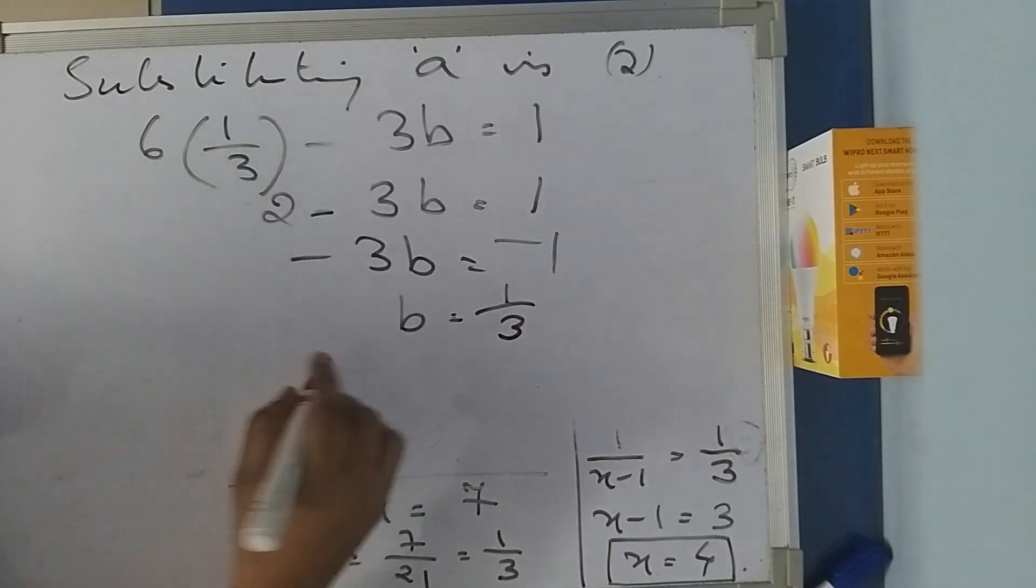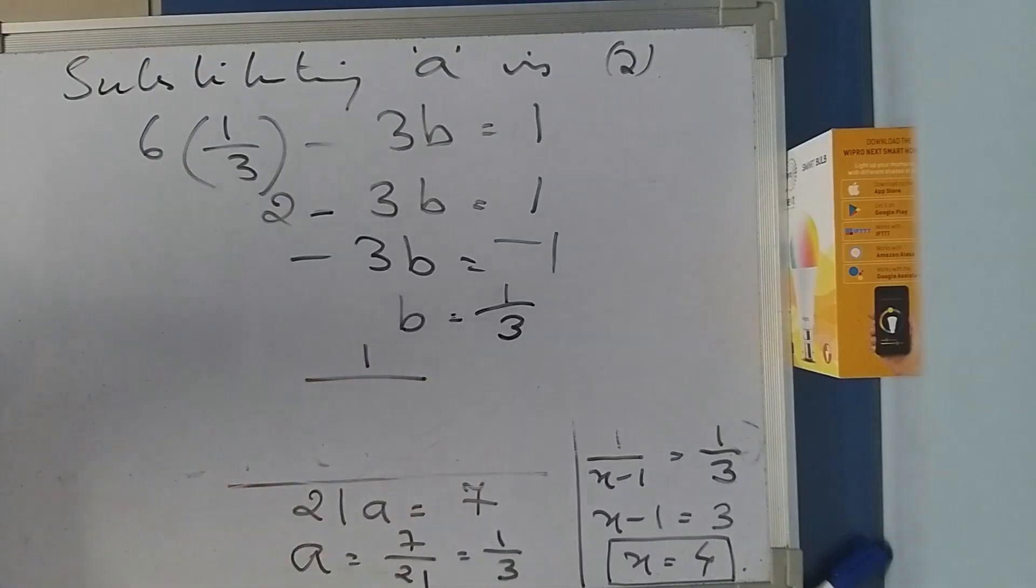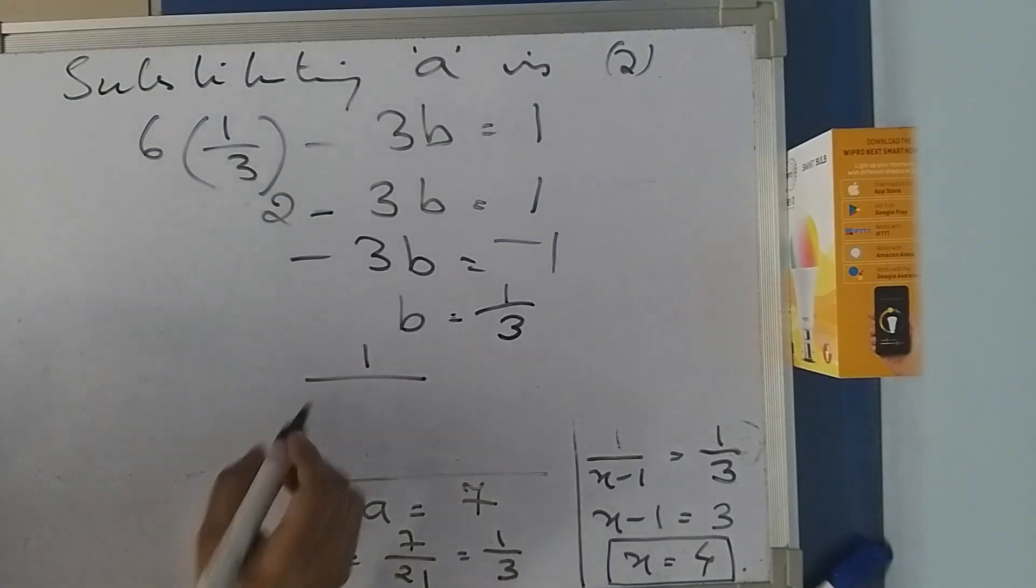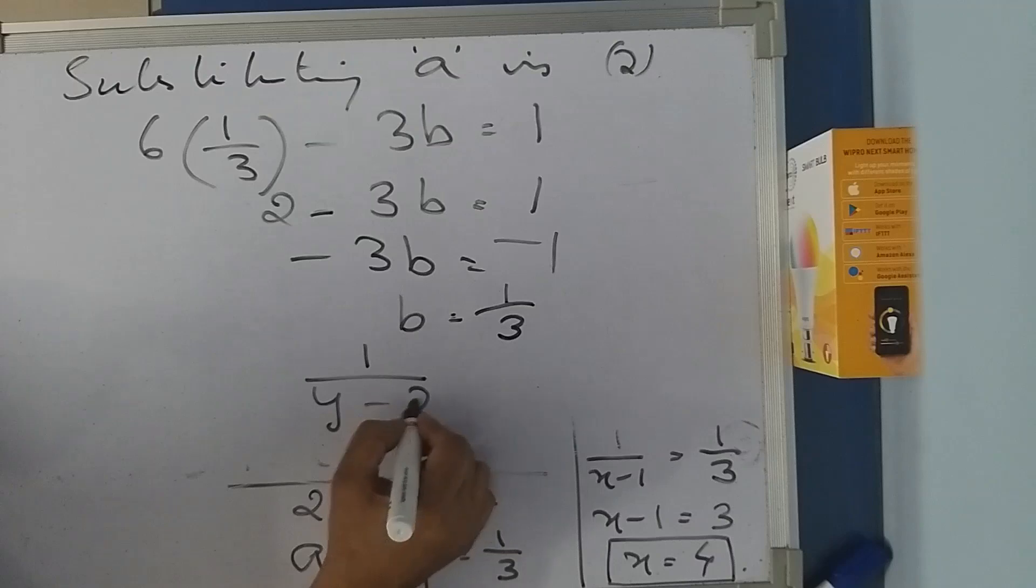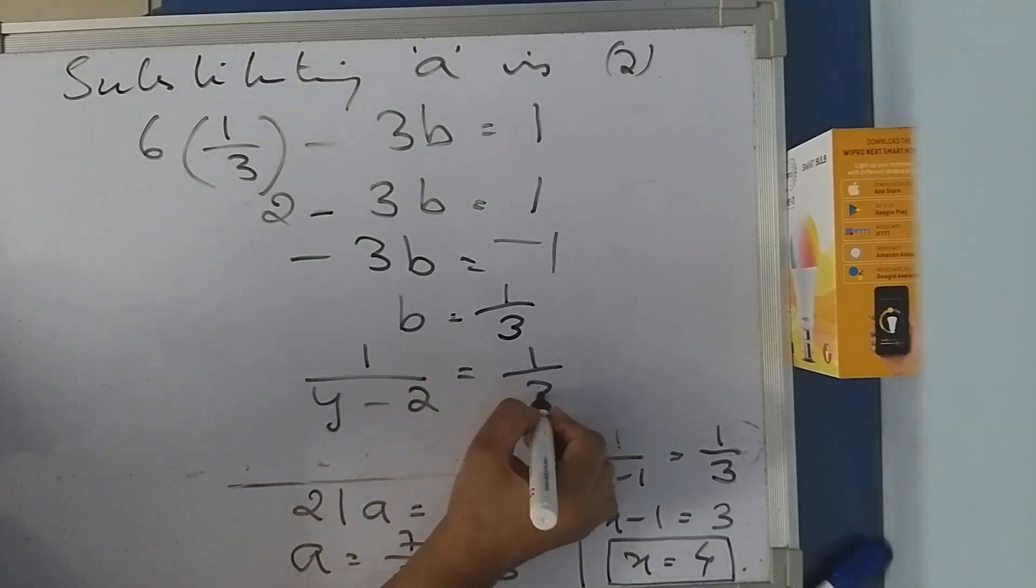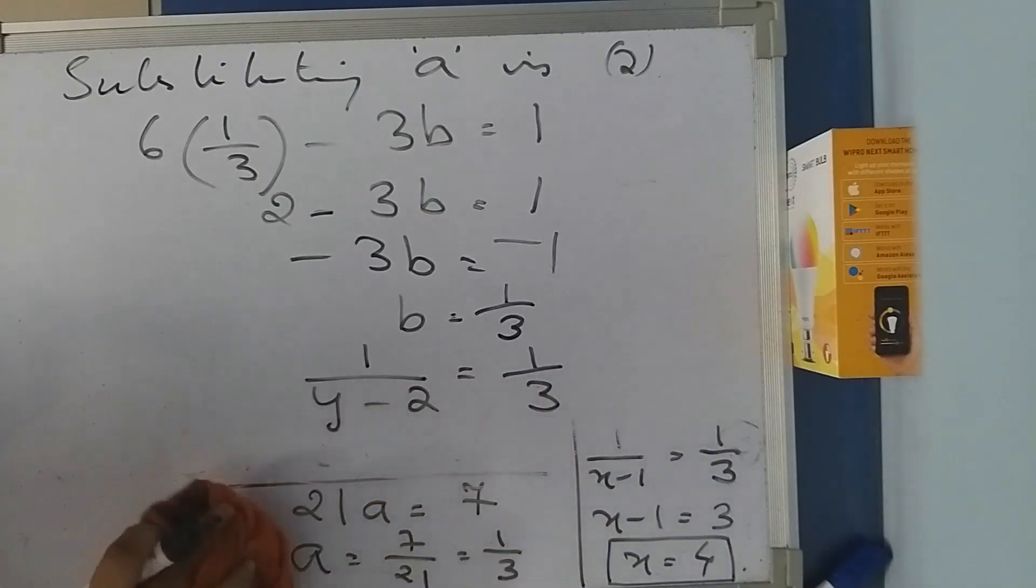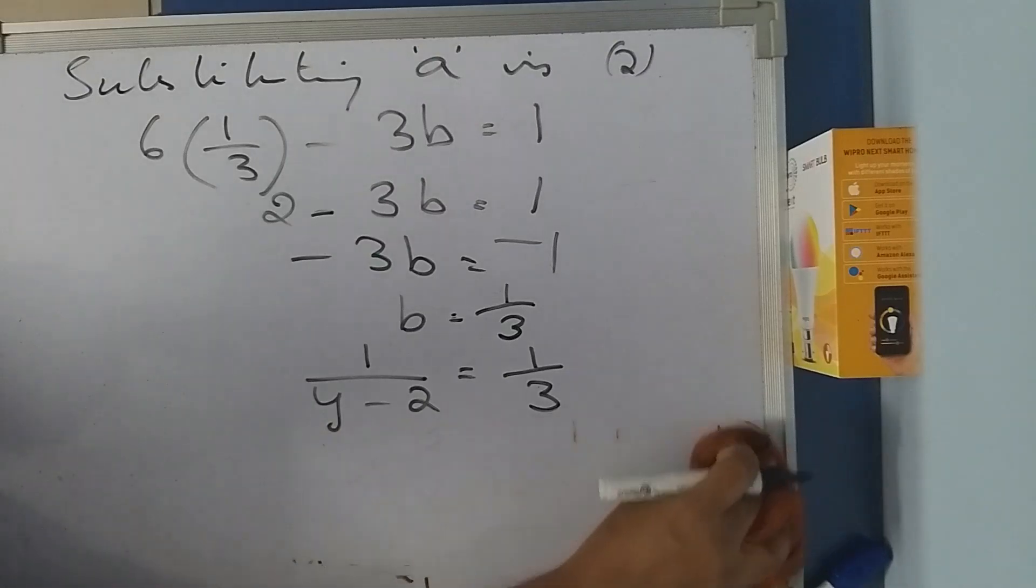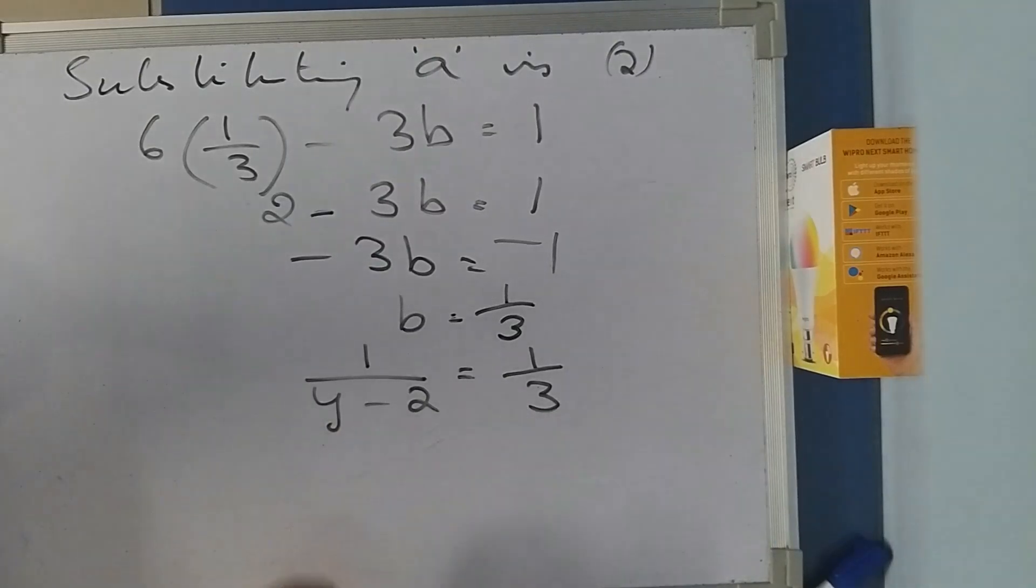B = -1/(-3), that is 1/3. We had substituted B as 1/(y-2) = 1/3. If 1/(y-2) = 1/3, then y-2 = 3. Then y becomes 3 + 2, which is 5. Thus we get x and y.